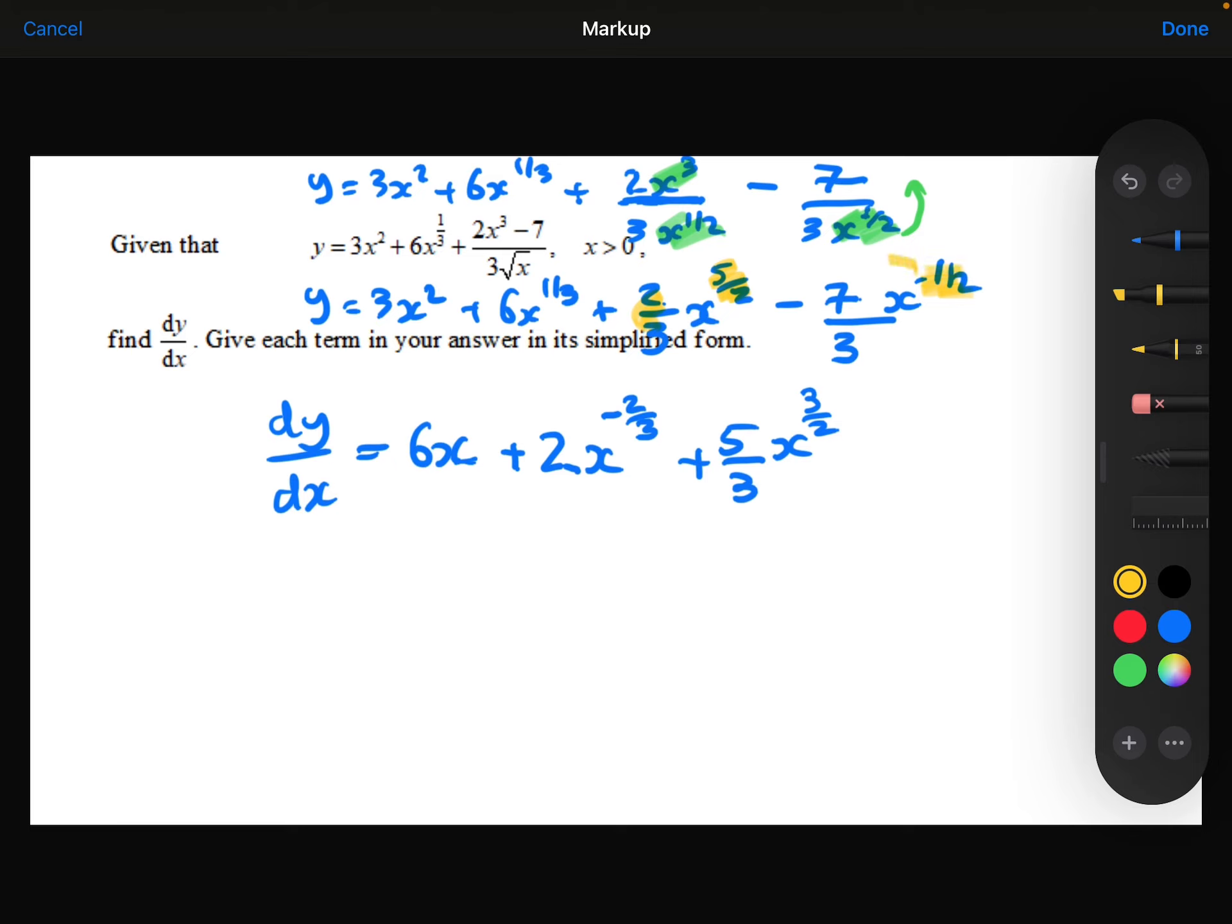Then we've got the minus 1 half times the minus 7 over 3, which will give positive 7 over 6. Take 1 away from the power. Minus 1 half take away 1 is minus 3 over 2.